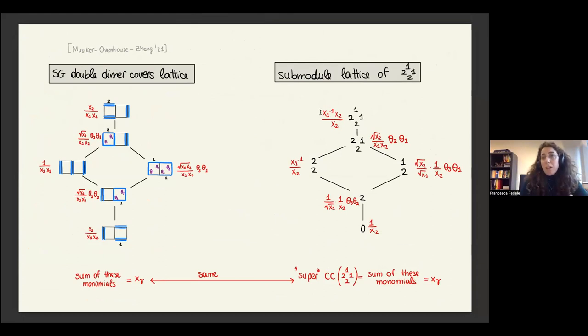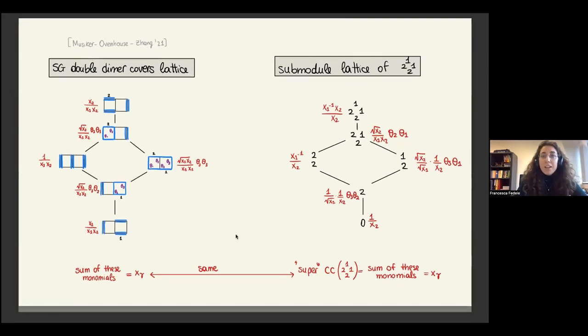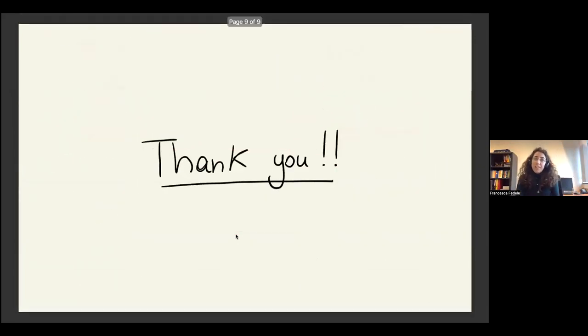We can actually compare term by term our submodule lattice of these induced modules and the lattice of snake graph double dimer covers from Musiker, Ovenhouse and Zhang. We can see that the terms are the same term by term. So our super CC map gives us exactly the same super lambda lengths that were computed using the snake graph in their paper. This is the main result we have. Thank you.